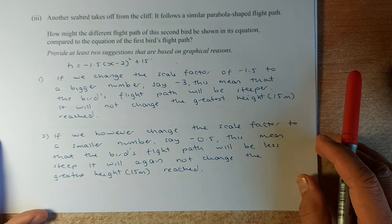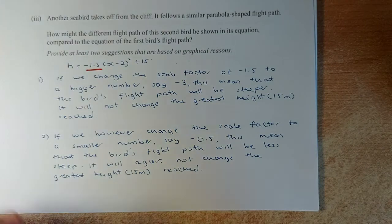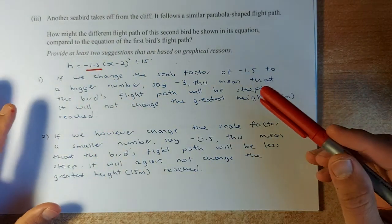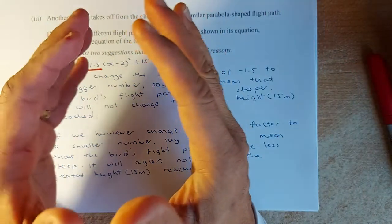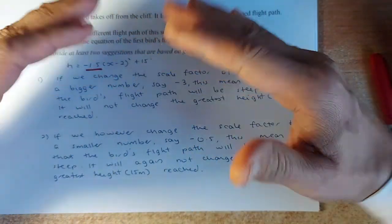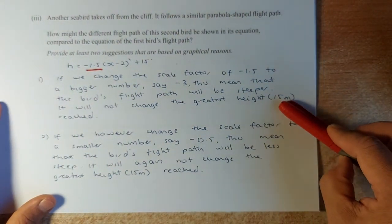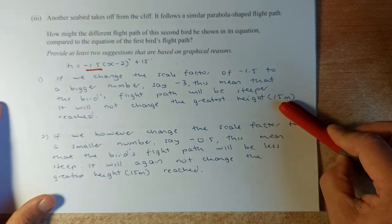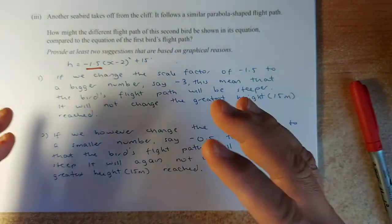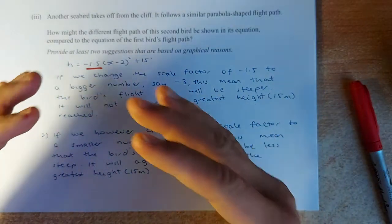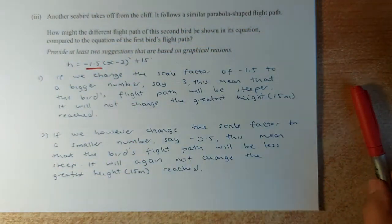If we change the scale factor instead of -1.5, if we change to a bigger number like -3 or -5, what will happen is the graph will get steeper. Instead of going this way, it goes steeper. But the 15 meters will still not change, it will still be the maximum point. Similarly, if we change the value of -1.5 to a smaller number like -0.5, instead of getting steeper, it will get flatter.